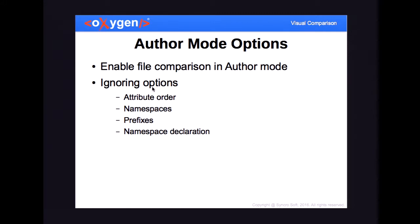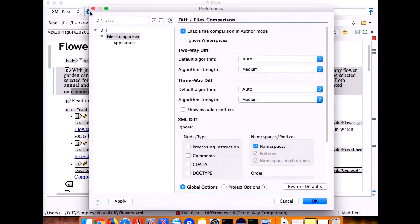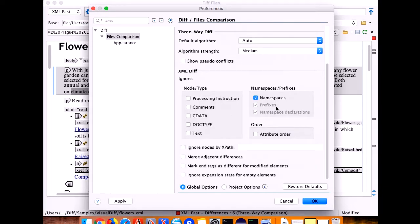There are also some options available for the author mode comparison. You can disable or enable it — by default it is enabled in Oxygen. There are some ignoring options regarding the attributes order and the namespace, and those can be configured from the file comparison page. You have options to enable or disable the author mode comparison, and also options for namespace prefixes and attribute order.